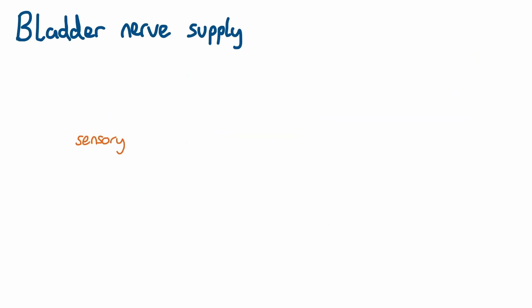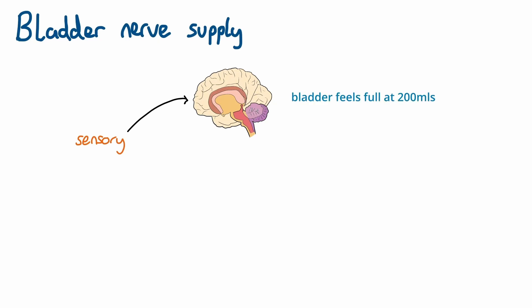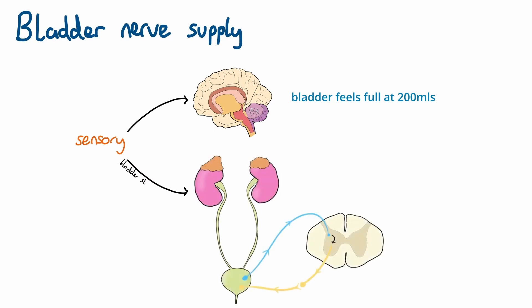The sensory nerves are those which carry information from the bladder to the central nervous system. There are neurons connecting the bladder to the brain which allow us to feel when our bladder is full, and these are generally stimulated when the bladder reaches around 200 mls. But there are also sensory neurons that only reach the spinal cord and then loop back around to the pelvic nerve without reaching the brain.